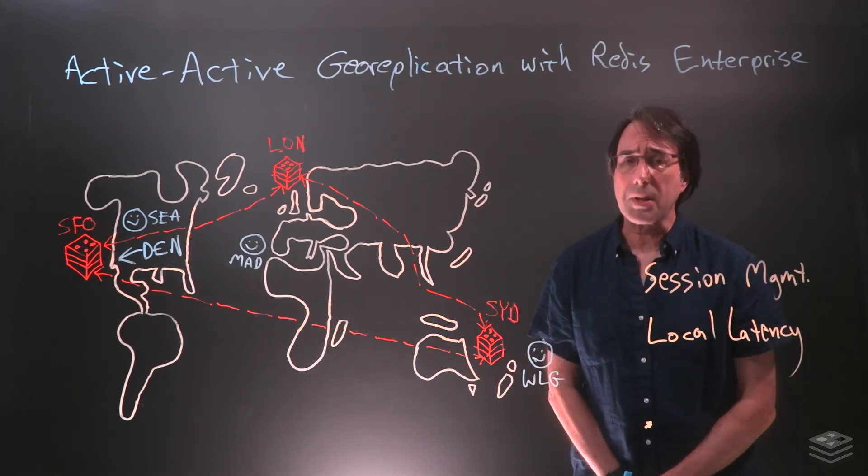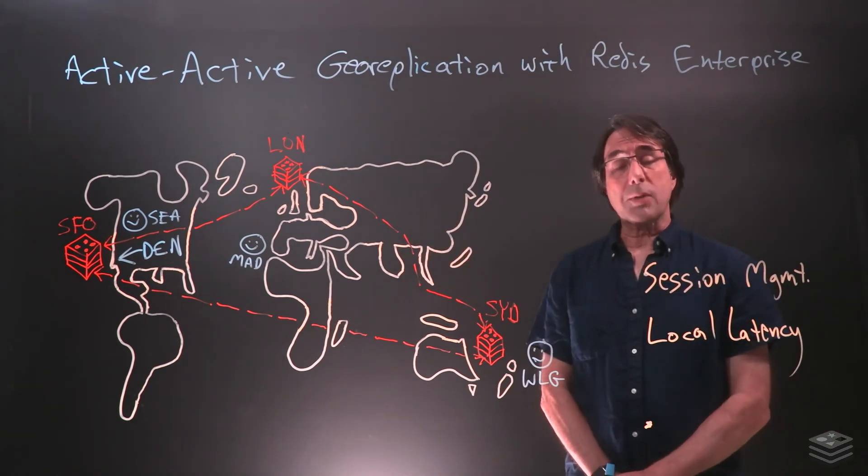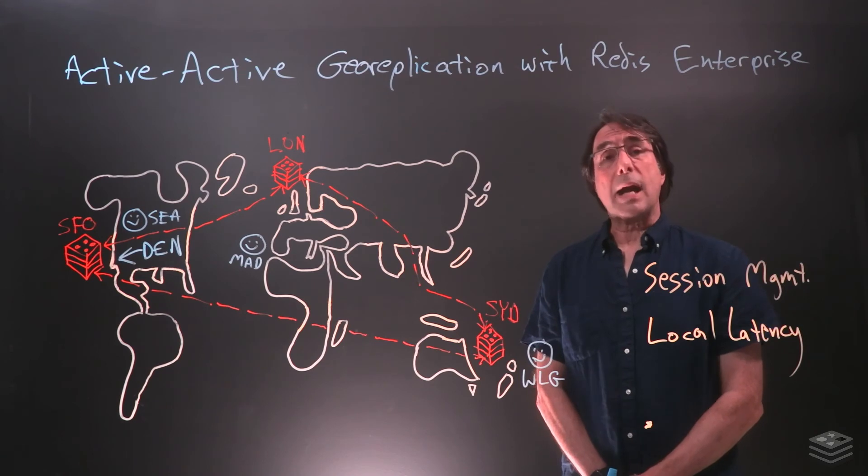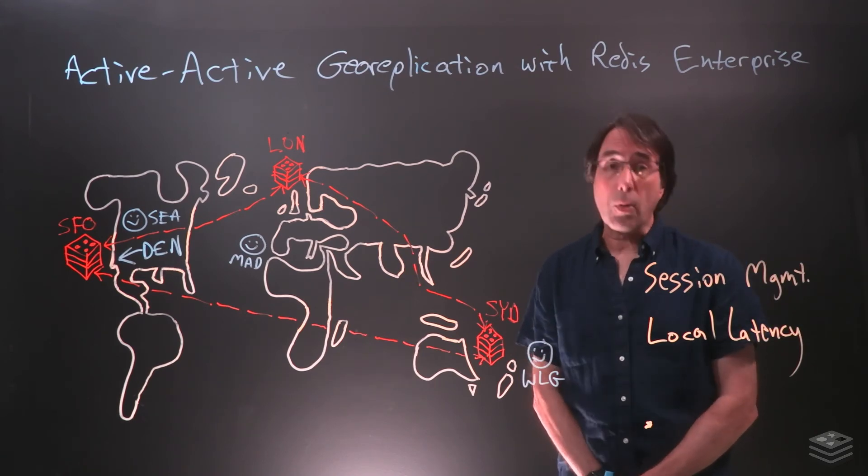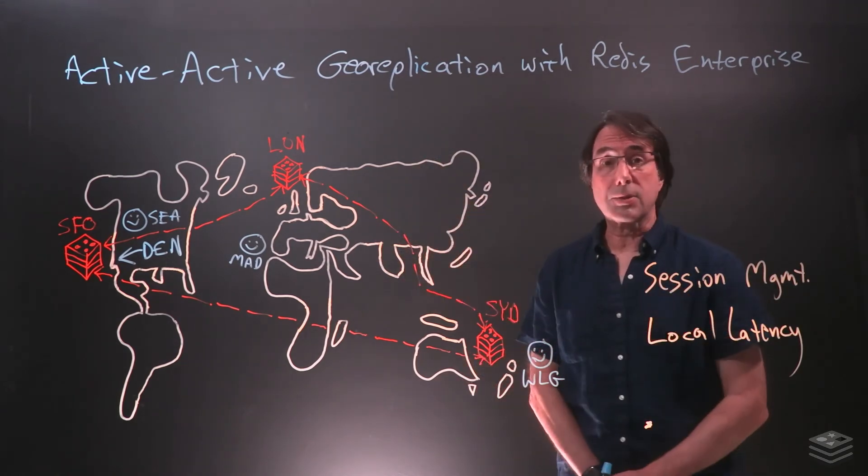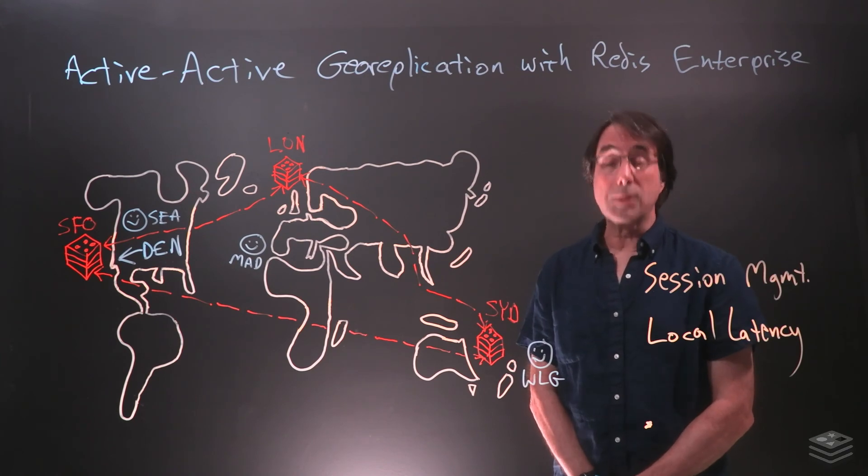So in this scenario, what happens is each player is using their closest replica. They get great performance, but as their scores change, their health level changes, their position on the leaderboard, etc. Anytime something changes, it's automatically distributed amongst all the replicas. So everyone gets a great gaming experience, but things like scores and leaderboards are automatically kept in sync across all the replicas of the database.